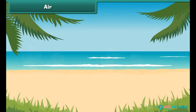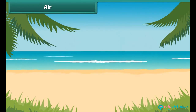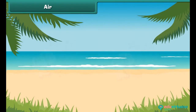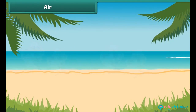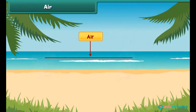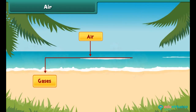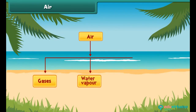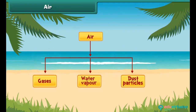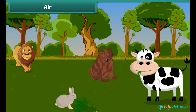First, let's talk about air. Air, as we know, is present around us everywhere. It contains gases, water particles — which are also called water vapors — and dust particles. Animals and plants breathe air to live.